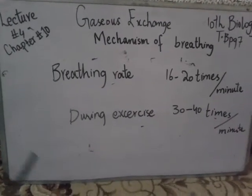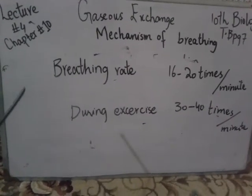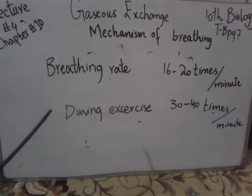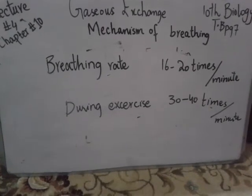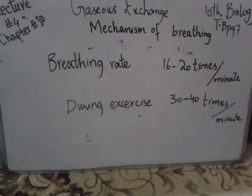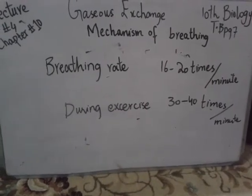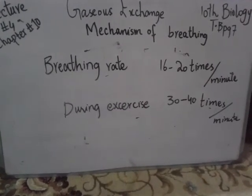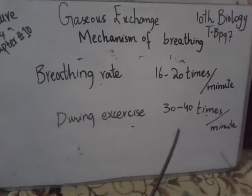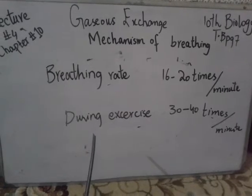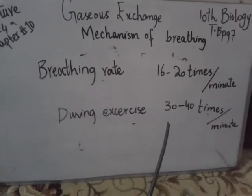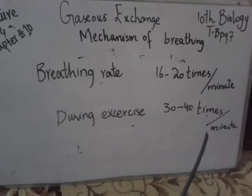Now we will discuss the breathing rate of a normal human being and a person who is doing exercise. A normal human being breathes 16 to 20 times per minute, while a person who is doing exercise breathes 30 to 40 times per minute.